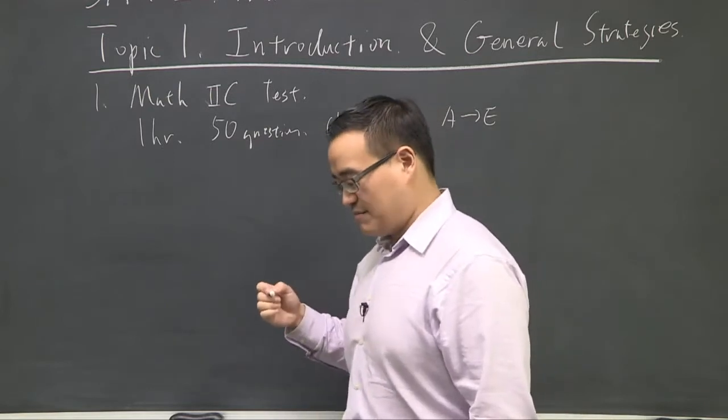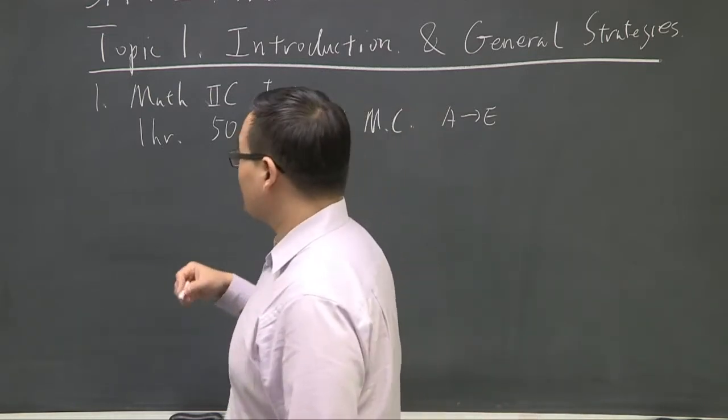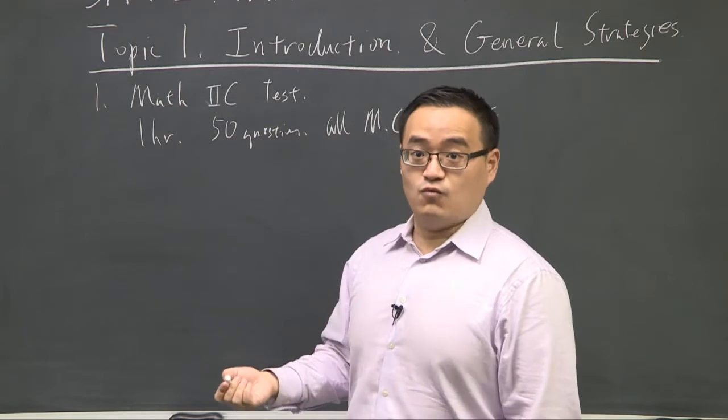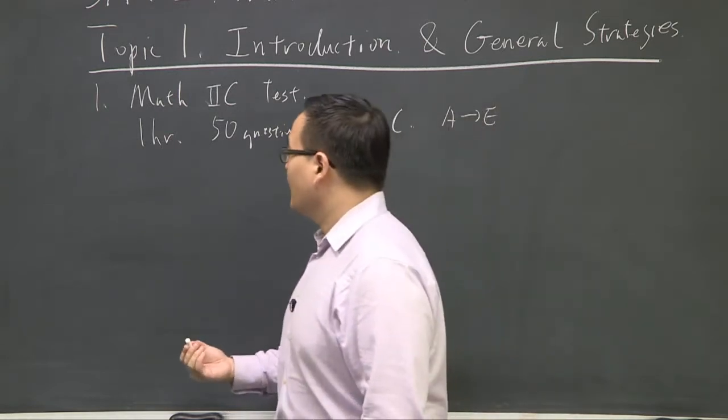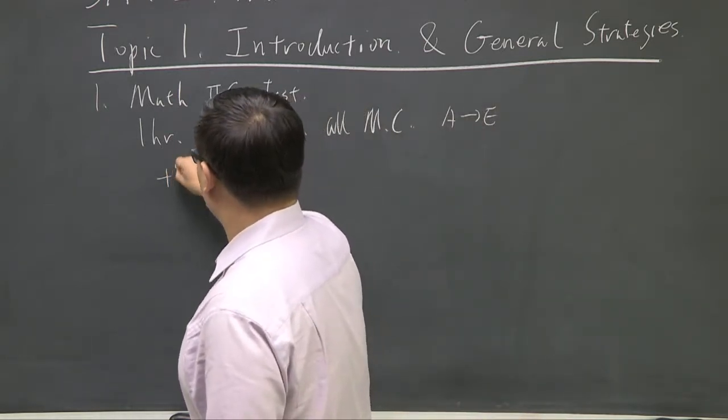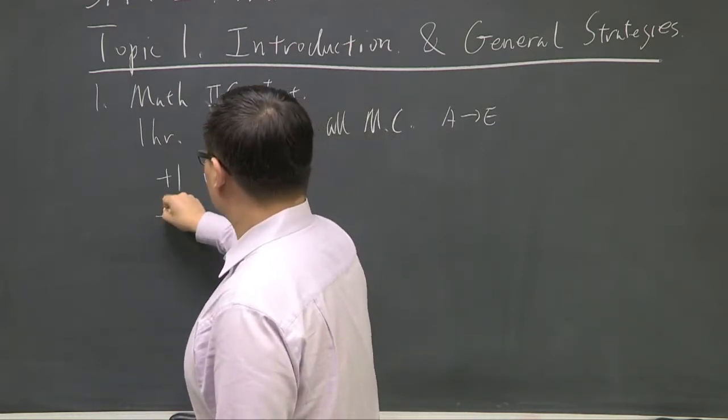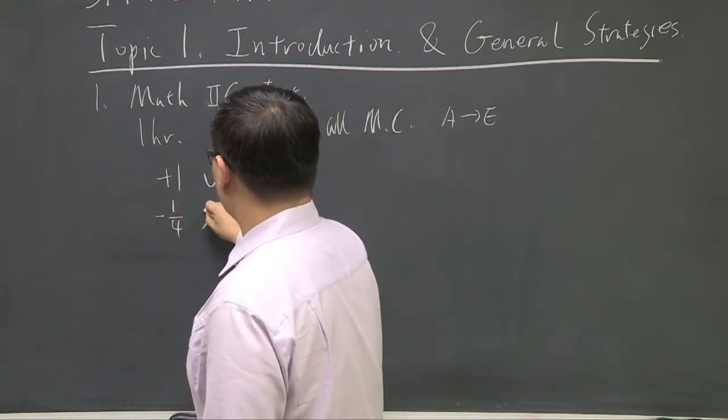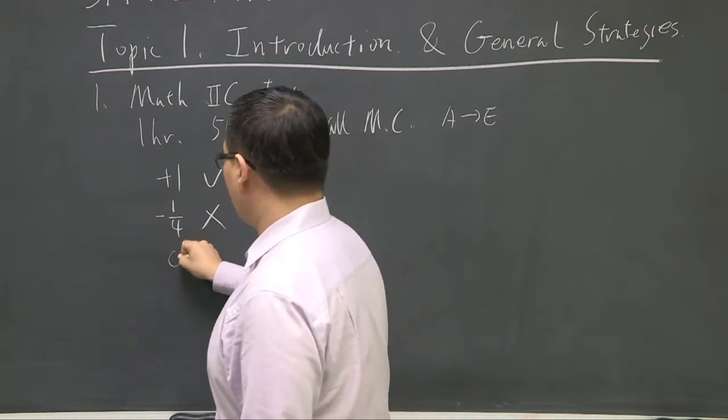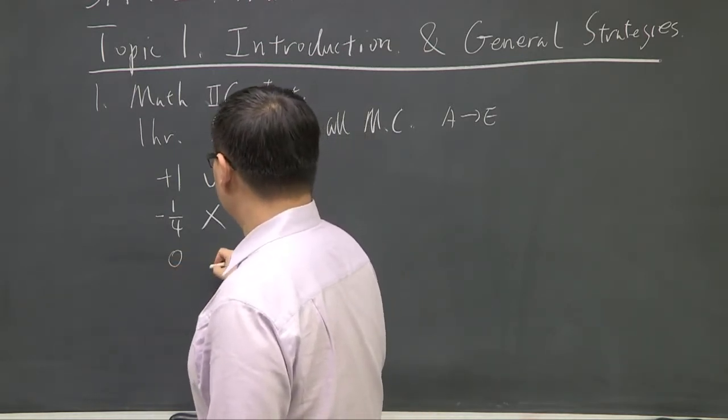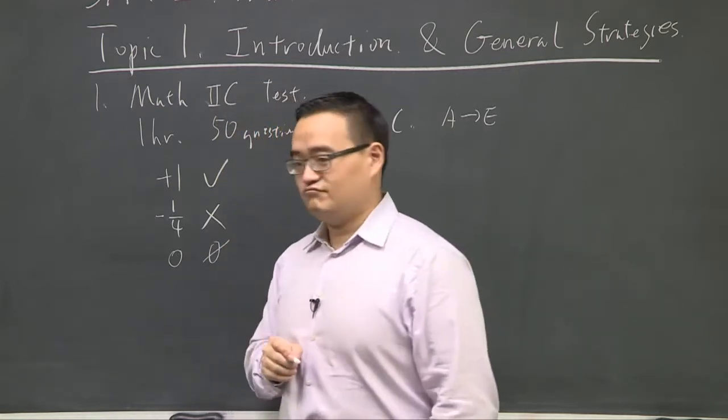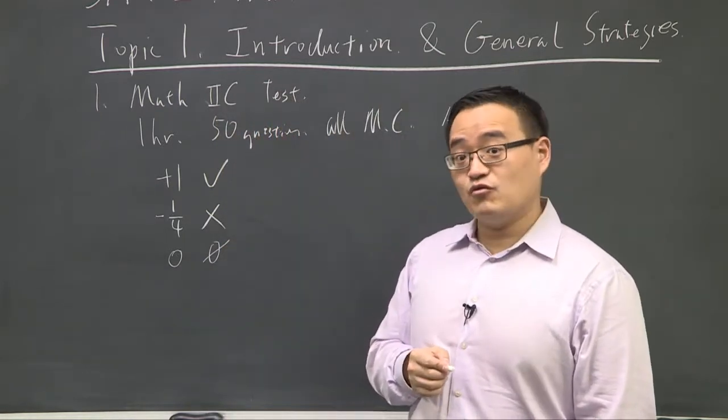And do a quick math. The way you're scored is very similar to all the other SAT1 portion of the math. You get plus a point when you get it right, you get subtracted a quarter of a point if you get it wrong, and if you leave a blank, well, you get a blank. You don't get any points.